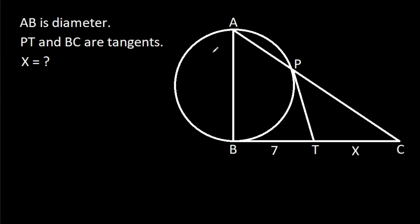In this video, we have been given a circle. AB is a diameter of the circle, and PT and BC are tangents to the circle. BT is 7 and CT is X. We have to find X.